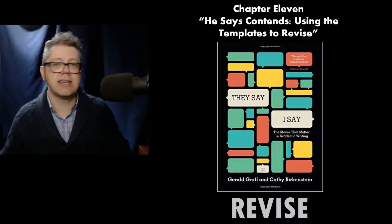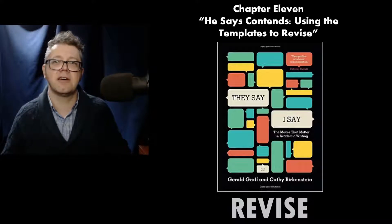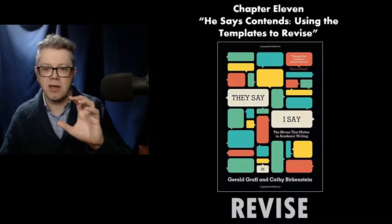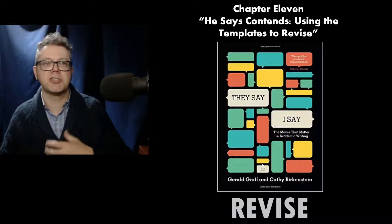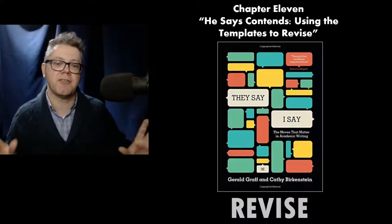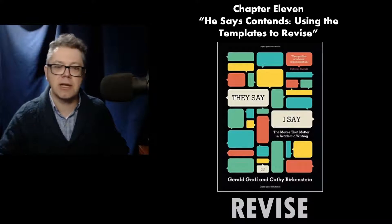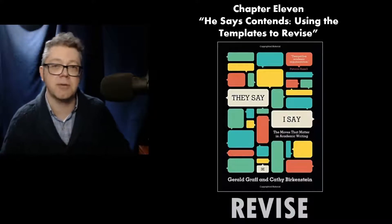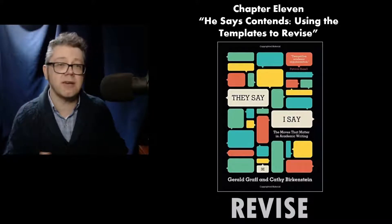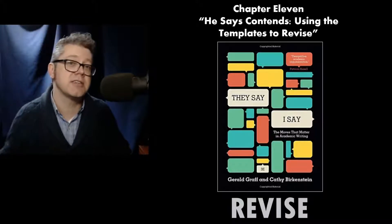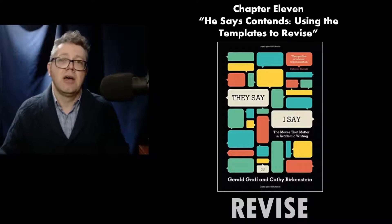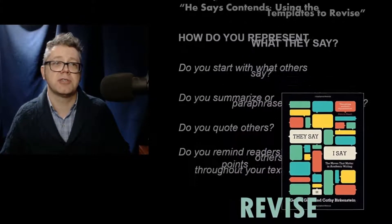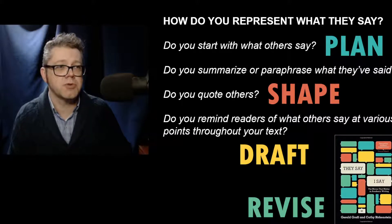Chapter 11 of They Say I Say does the same thing as Goxick does in Writing About Movies, and I think it's a really great checklist — rather than just nebulously knowing you need to revise, you have a list you can go through: did I do this, did I do this, did I do this? If you're watching and not part of my class, maybe pick up Karen Goxick's Writing About Movies or a copy of They Say I Say — third, fourth, or fifth edition — and you'll get this revision checklist. It's worth having.